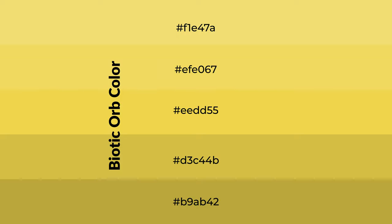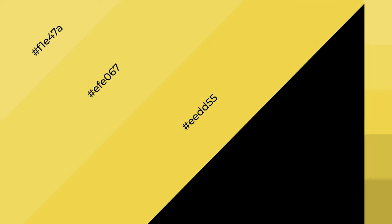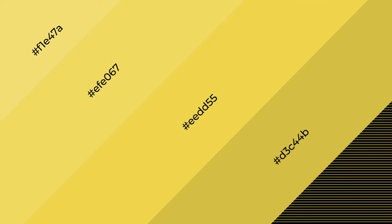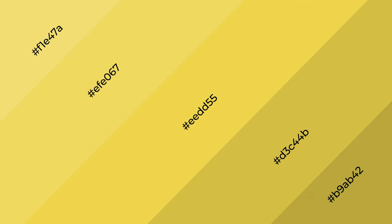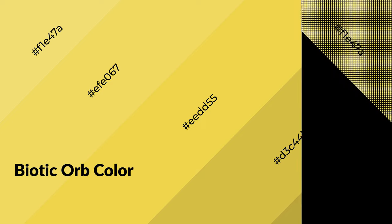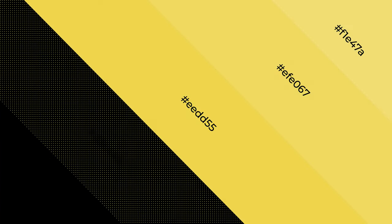To generate shades of a color, we add black to the color. It is used in patterns, 3D effects, and layers. Shades create depth and drama. Biotic orb is a warm color and it emits cozier and active emotions. Warm colors are symbols of warmth, fire, heat, and sunshine.